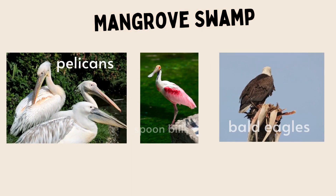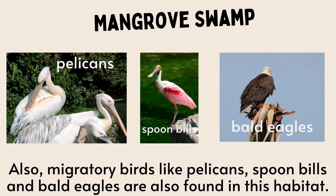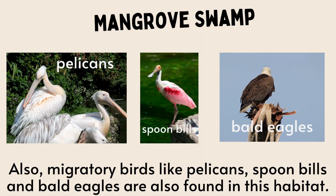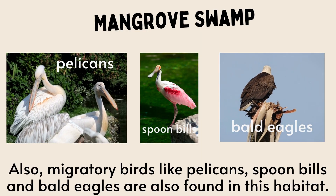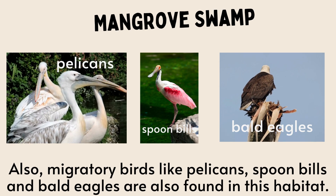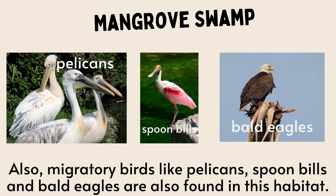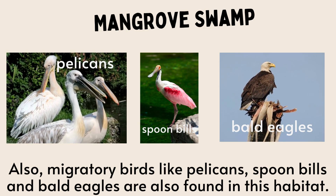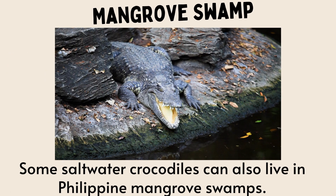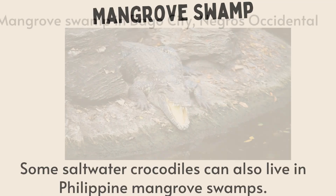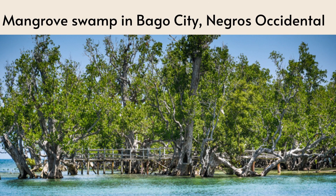Also, migratory birds like pelicans, spoonbills, and bald eagles are found in this habitat. Some saltwater crocodiles can also live in Philippine mangrove swamps. This is an example of a mangrove swamp found in Bago City, Negros Occidental, Philippines.